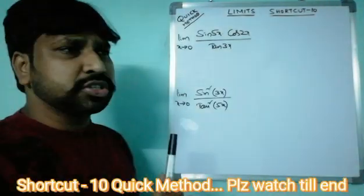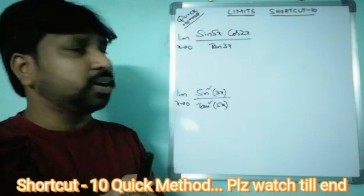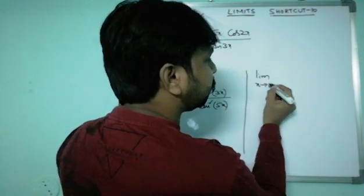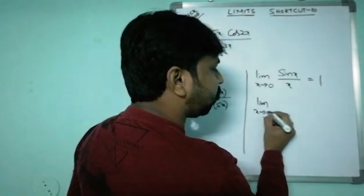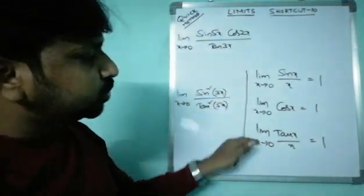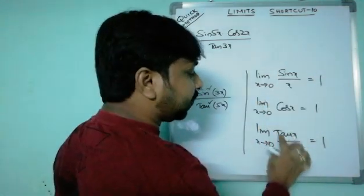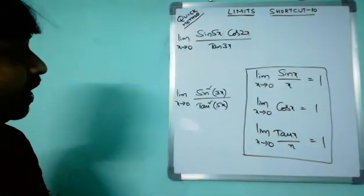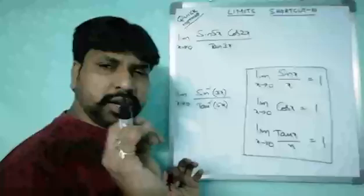Friends, for all these related questions, if you know just three small formulas, that is enough to solve them very easily. The formulas are: limit x tends to zero sin(x)/x = 1 (by sandwich theorem), limit x tends to zero cos(x) = 1, and limit x tends to zero tan(x)/x = 1.